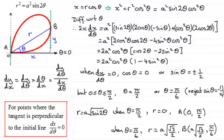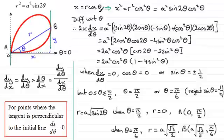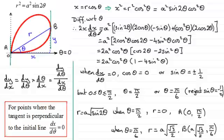I hope that gives you some idea of how to approach problems like this — finding the coordinates of points on a polar curve where the tangent is perpendicular to the initial line theta equals zero. We start from x = r cos θ, differentiate to find dx/dθ, and set it equal to zero. In this example it was easier to square both sides because we had r squared. Differentiate, find dx/dθ, set it to zero, solve the resulting equations, and you'll get the coordinates of the points where the tangent is perpendicular to the initial line.